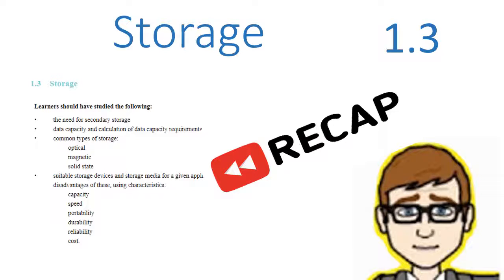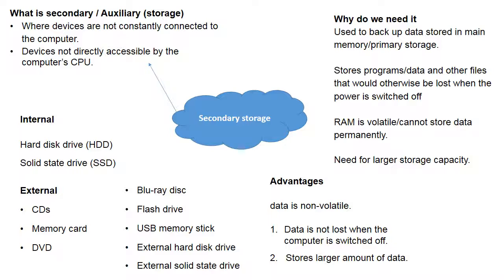Storage 1.3 recap. Secondary storage, sometimes called auxiliary storage, is where devices are consistently connected to a computer. It's not directly accessible by the CPU. If you think of the layout of the motherboard, the hard drive or solid-state disk, whatever you're using as secondary storage, isn't directly built onto the motherboard. RAM does bolt on and fits in a slot, whereas you have to connect a hard drive with cables.